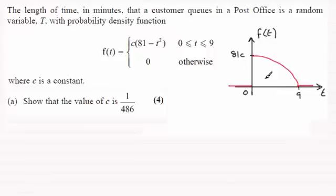But sometimes you get probability density functions where you've just got straight lines and you end up with nice geometrical shapes. And the reason why I'm doing this is because in order to show that the constant c is 1 over 486 we use the fact that the area bounded by the curve and the axis is 1.